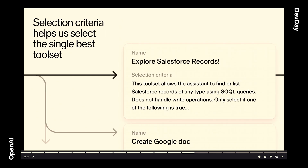Going back to the title — multi-talented agents — how do we handle all these workflows like creating Google Docs, querying Snowflake and Salesforce, all from the same user interface? For that, we need routing. We have a router LLM that picks out toolsets. Each toolset also has selection criteria — copying verbatim: 'This toolset allows the assistant to find or list Salesforce records of any type using SOQL queries, does not handle write operations, only select, if one of the following is true...' This lets us carve out specific conditions for when a user's message should be handled by a particular set of tools, ensuring the user gets the best tools without accidentally getting irrelevant ones.